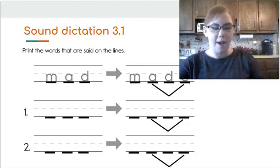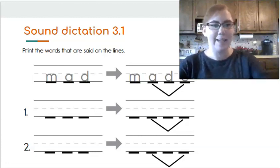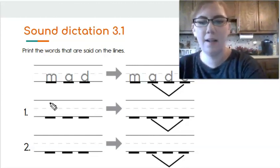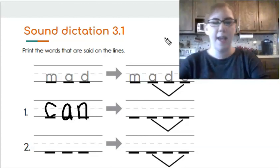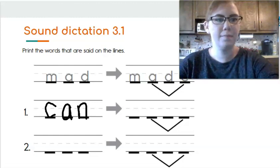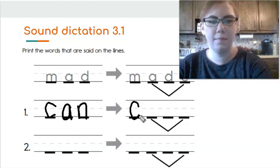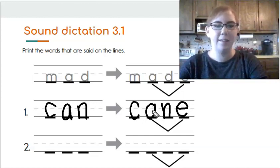Let's try another one. The next word we're going to write is can. C, A, N, can. Now what would that be if we add an E at the end? Now it has that letter team that says A. C, A, N, E, cane.